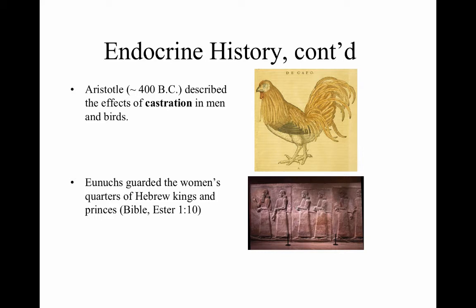Also around 400 BC, Aristotle described the effects of castration in men and birds. Castration — removal of the testes — was noted to stop procreation. Eunuchs guarded the women's quarters of Hebrew kings and princes; this is noted in Esther, chapter 1, verse 10. Men who couldn't procreate but still had the strength of a man were considered perfect guards in that era's view.